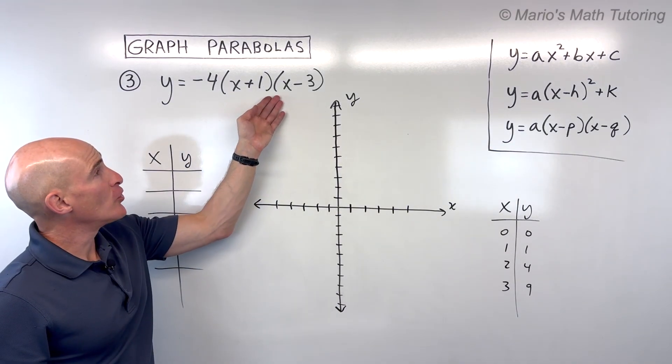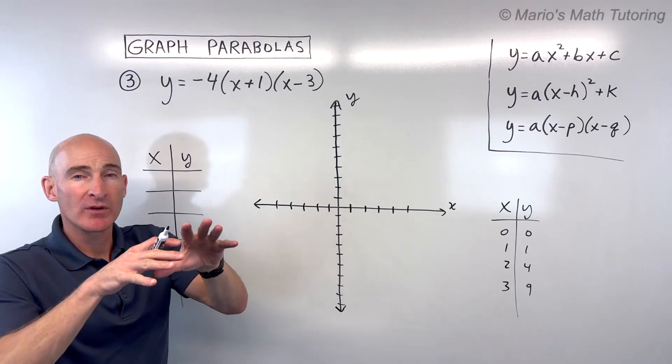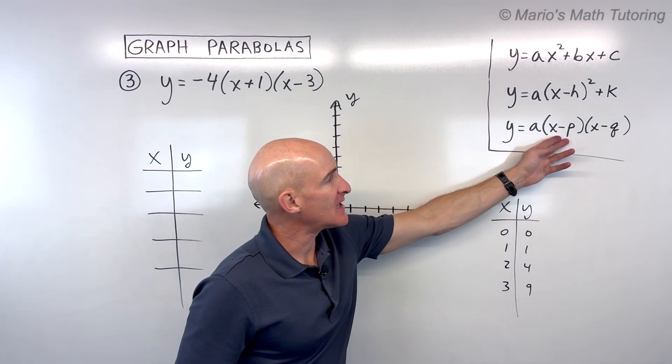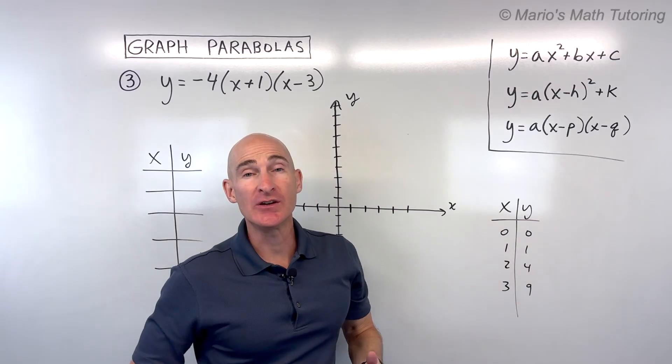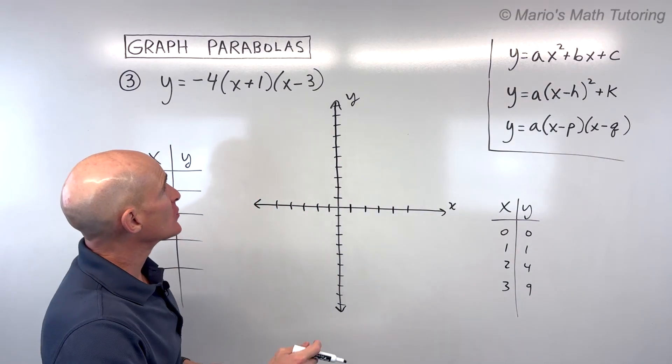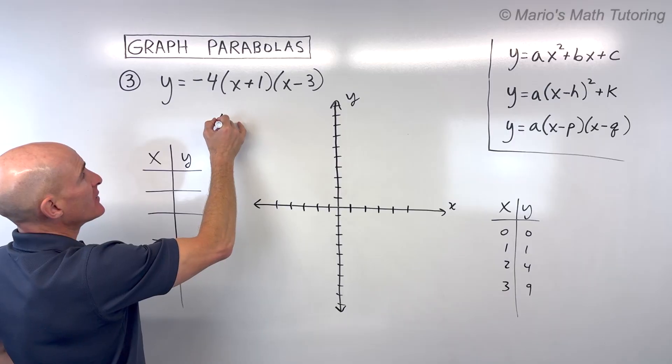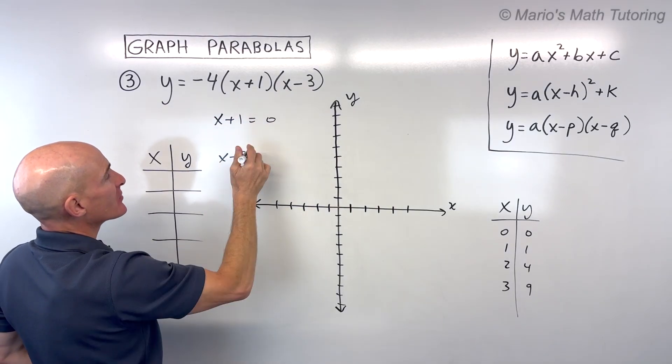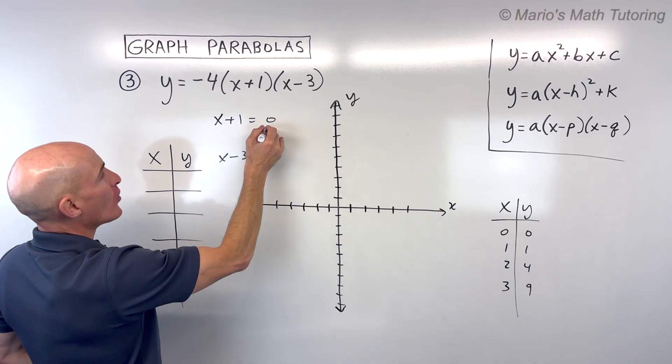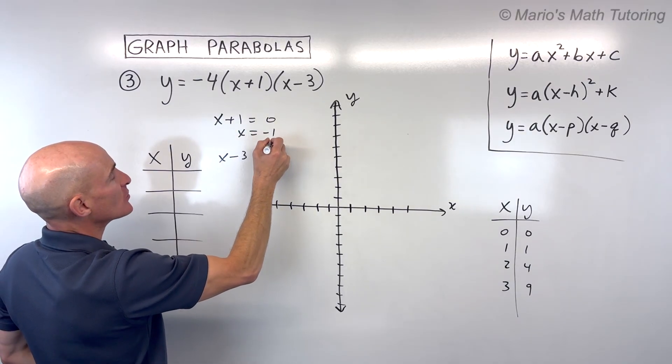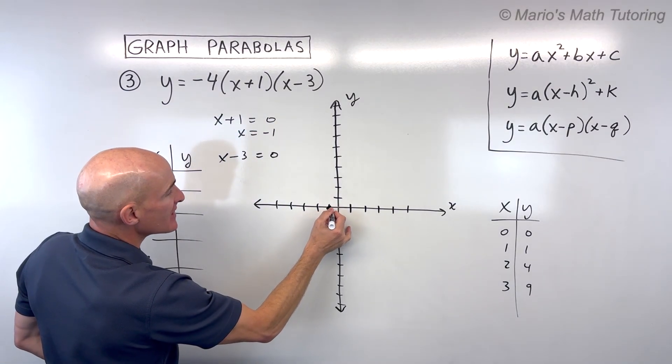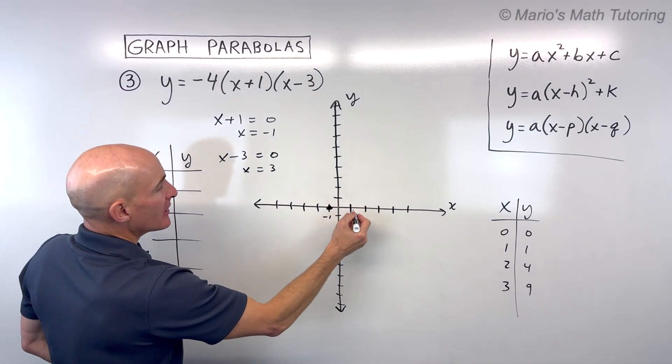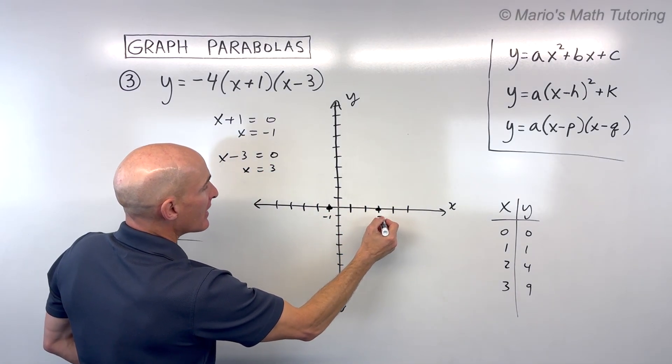For number three, notice that this intercept form is what we call a factored form. So when it's in this factored form, by setting these factors or groups equal to zero, we can find the x-intercepts. So what you do is take this group, make a little mini-equation, set it to zero. Same thing with this factor, set it to zero. If I subtract 1 from both sides, you can see that x equals negative 1, which means it crosses the x-axis right here. And if I add 3 to both sides, it crosses the x-axis over here at positive 3.